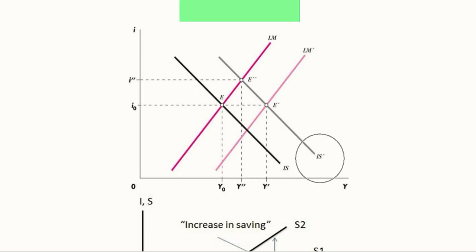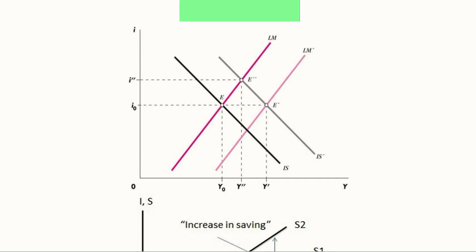If we shift the IS curve from IS to IS-bar, we get a new equilibrium. If we also shift the LM curve outward, it gives rise to another equilibrium. So E-bar and E-double-bar are two additional equilibria. By shifting both the IS and LM curves, we end up with three equilibria, allowing us to compare three levels of national income and different levels of interest rate at equilibrium.